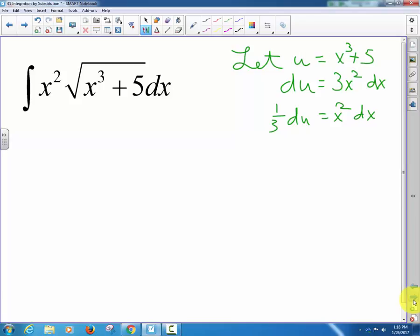And then, remember I told you a common mistake students will make is now looking at the original problem to write down what their du is. You have to get your du from what you wrote down for u. Your du has to be 3x squared dx. Now is when you compare it to the problem over there. We don't have 3x squared over there. That's right. So, we're going to take the one third over here.